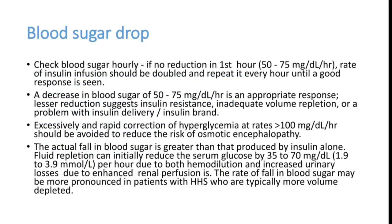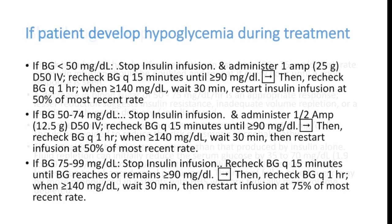The recommended blood sugar drop is 50–75 mg/dL per hour by fluid resuscitation or insulin. If reduction is faster than that, it can cause brain damage. There is no need to normalize blood sugar rapidly — over 24 hours is appropriate.